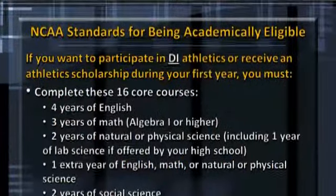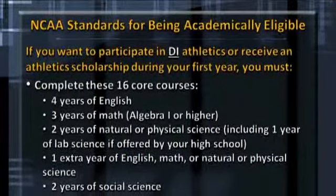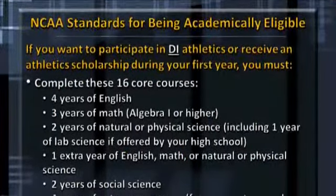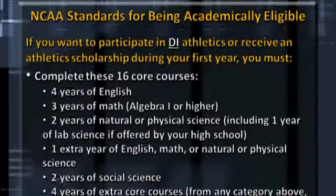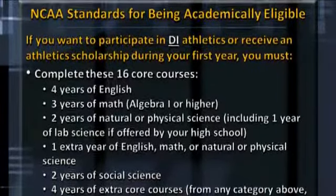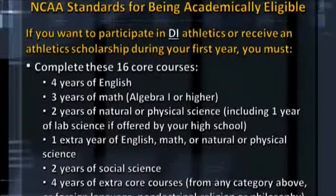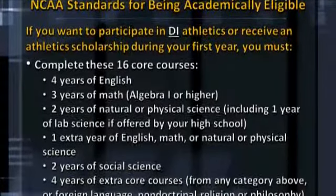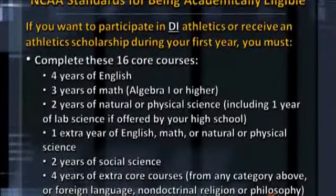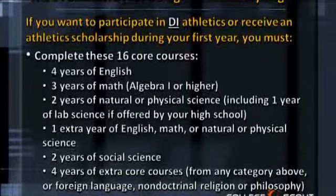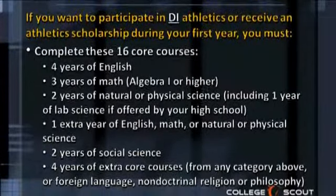Second, you must complete 16 essential core courses that include 4 years of English, 3 years of Math — that's Algebra 1 or higher — 2 years of Natural or Physical Science, including 1 year of Lab Science, and 1 extra year of English, Math, or Natural or Physical Science.